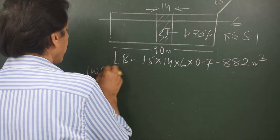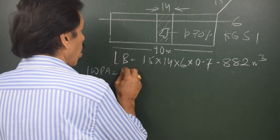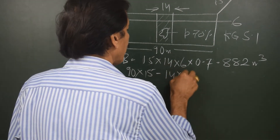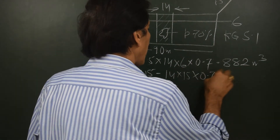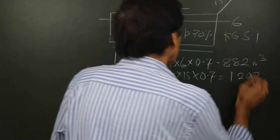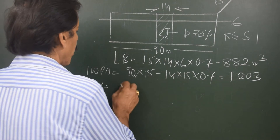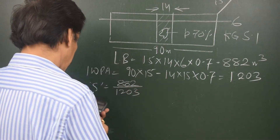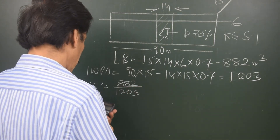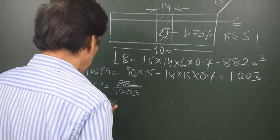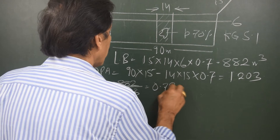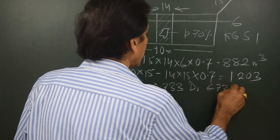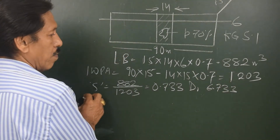Intact waterplane area equals total waterplane area minus lost waterplane area. Total is 90 × 15, minus lost area of 14 × 15 multiplied by permeability 0.7, giving 1203 square meters. Sinkage equals lost buoyancy divided by intact waterplane area: 882 ÷ 1203 = 0.733 meters. Therefore the new draft is 6.733 meters.